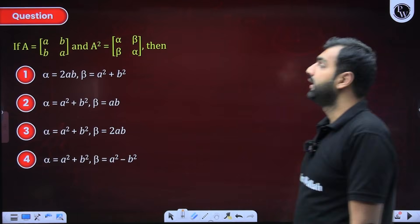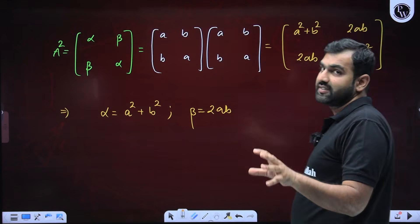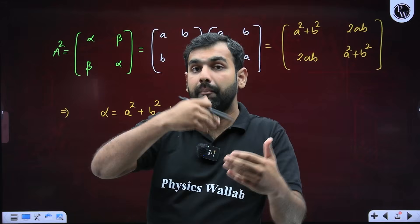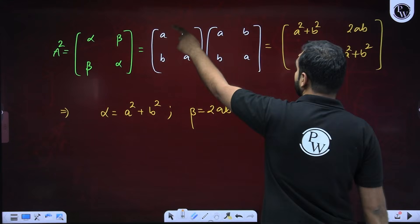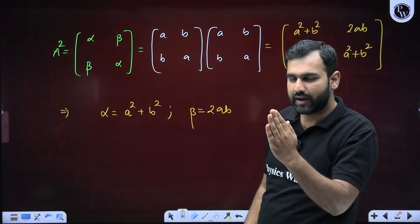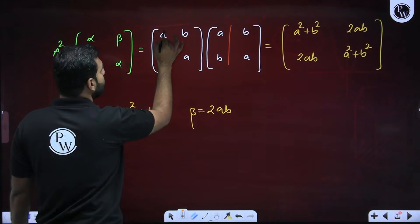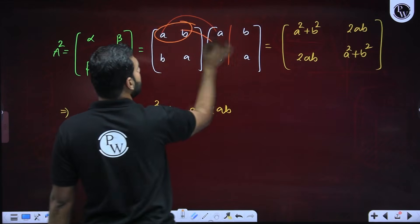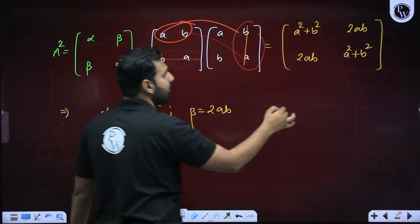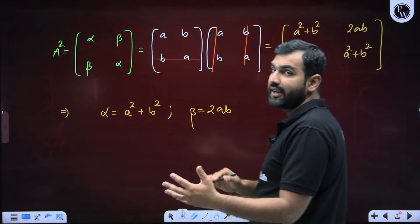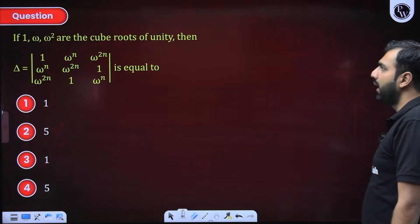Now let's look at the next question. It says this is a matrix A and this is its square A². We need to figure out certain values. If matrices are to be compared, they are compared with respect to their corresponding entries. Here A² is given as [alpha, beta; beta, alpha] and A is given as [a, b; b, a]. I can find A² by matrix multiplication. First row times first column gives a²+b², and first row times second column gives 2ab. So alpha equals a²+b² and beta equals 2ab, and accordingly you can mark the correct options.